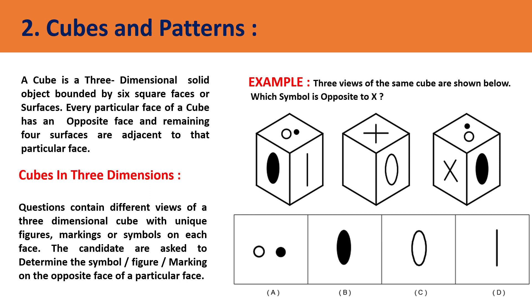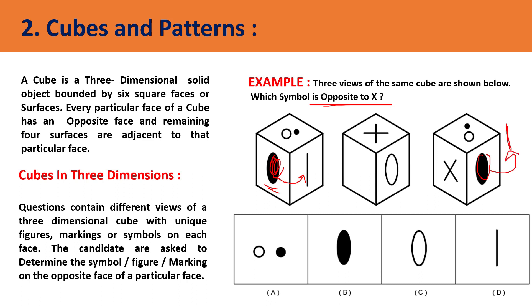The question asks: three views of the same cube are shown — which symbol is opposite to X? Look at all three figures given. Consider the prominent figure: if the filled elliptical shape is adjacent in one view, in option three you can see the same shape, and lying adjacent to it is a straight line. X is also lying adjacent to that same shape, so X must be on the opposite face to the straight line. The answer is D.